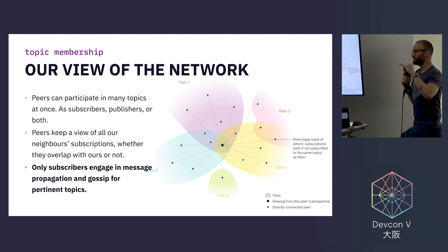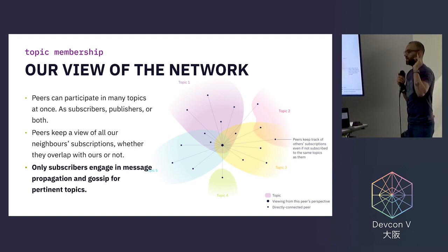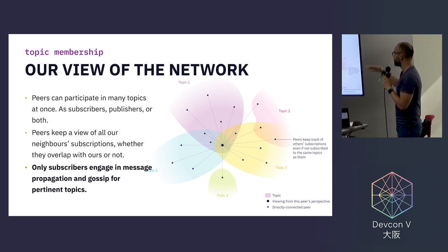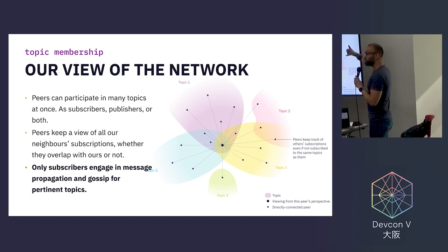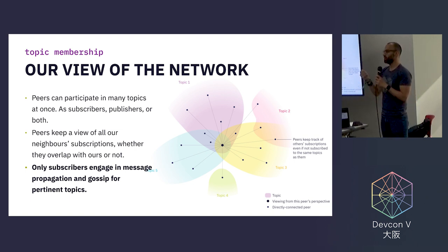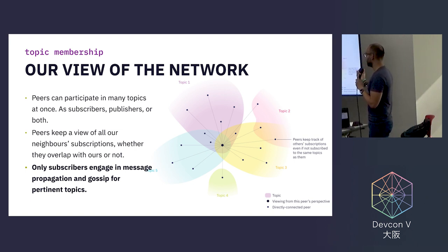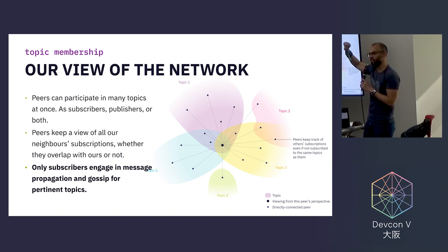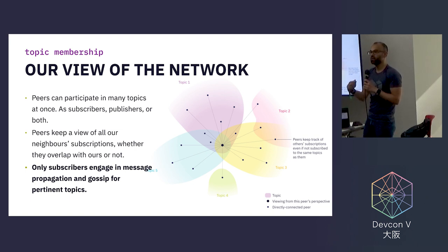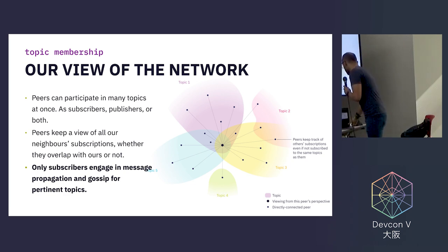How does topic membership work? A peer can be subscribed and emitting messages on various topics at once — peers can participate in many topics as subscribers, publishers, or both. Peers keep a view of all neighbor subscriptions whether they overlap with ours or not. Subscribers only engage in message propagation and gossip for subscribed topics. This satisfies a key desirable property: only those peers invested in a topic should be making effort towards disseminating it. GossipSub satisfies that.